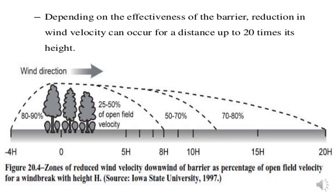From the windbreak to a distance of 8 to 10 times the height, wind velocity is only 50 to 70 percent of the original, meaning a reduction of 30 to 50 percent. On the windward side, from which the wind is moving, wind velocity is 80 to 90 percent, meaning windbreaks also cause a reduction of 10 to 20 percent on the windward side.